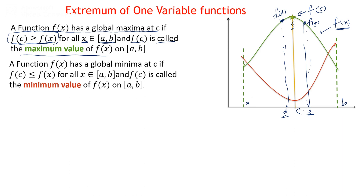Similarly for the minimum value: the function f(x) has a global minima at point c if f(c) is less than f(x) for all x belonging to the interval [a, b], and f(c) is called the minimum value. The function represented by the red curve shows f(c) is always less than all neighborhood point values f(d) and f(e).